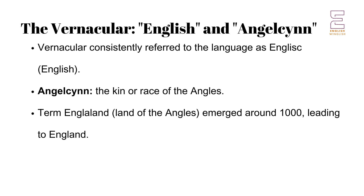In contrast to Latin usage, writers in the vernacular consistently referred to their language as Englisc, derived from the name of the Angles, which in Old English was called Angle. The language of all the invading tribes, whether Angles, Saxons or Jutes, was collectively referred to as English. The land and its people were initially known as Angelcynn, the kin or race of the Angles. This term remained prevalent until the Danish period. From around the year 1000, the term Anglaland, meaning land of the Angles, started to be used, marking the emergence of the name England.